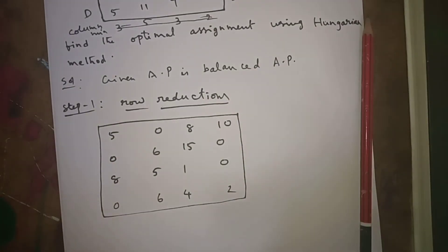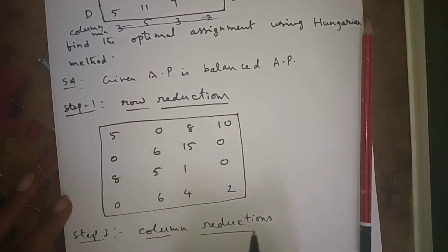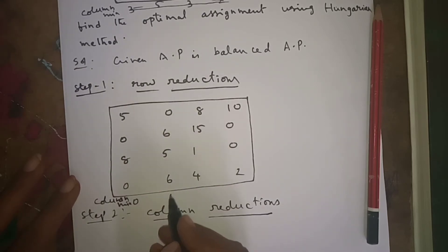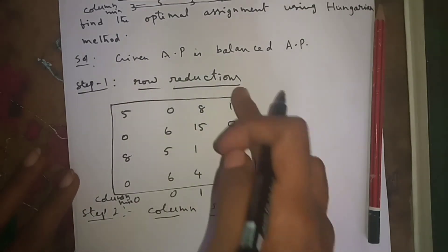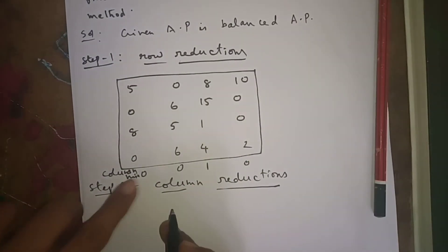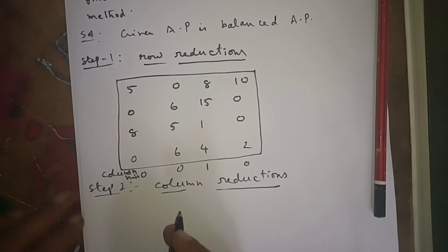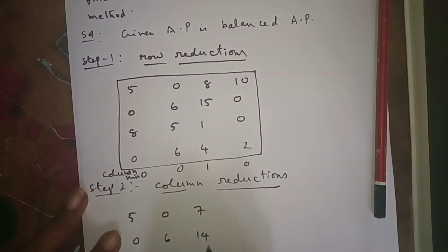Now step two: column reductions. We find the column minimums. First column minimum is zero, second column minimum is zero, third column minimum is one, fourth column minimum is zero. We subtract zero from the first column, zero from the second column, one from the third column, and zero from the fourth column. The resulting matrix has entries: 5, 0, 7, 10; 0, 6, 14, 0; 8, 5, 0, 0; 0, 6, 3, 2.